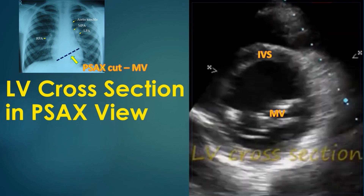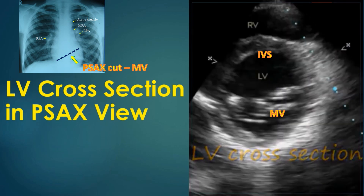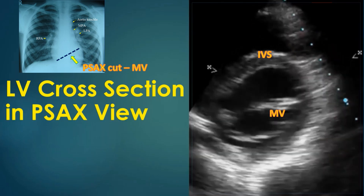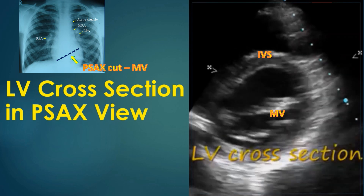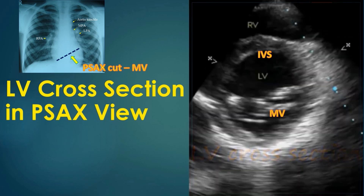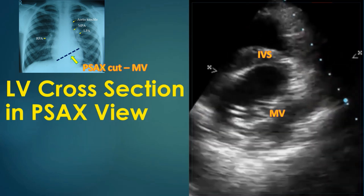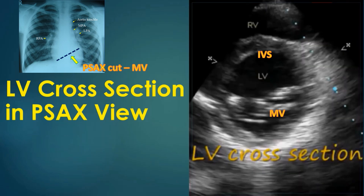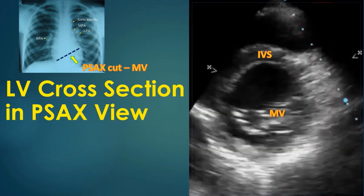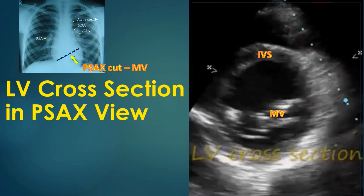Short axis imaging at the ventricular level can be obtained by directing the beam downwards from the previous position. It is used to assess the cross section of the mitral valve in mitral stenosis to quantify the mitral valve area. Left ventricular wall motion abnormalities can be visualized well in this view. The left ventricle has a circular shape and the right ventricle is semilunar with the septum convex to the right ventricle.